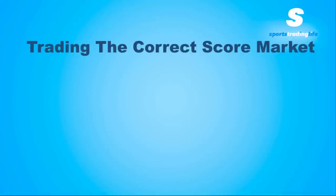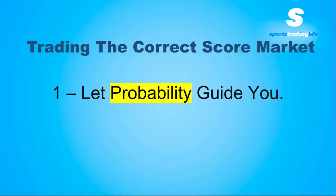There is lots to learn when it comes to correct score trading but picking out the target scores is pretty much step one, and a lot of people do overthink this and overcomplicate it. We've got a few tips here, and tip number one is to let probability guide you. You could just cover some of the most probable score lines and you'll do pretty well just doing that.